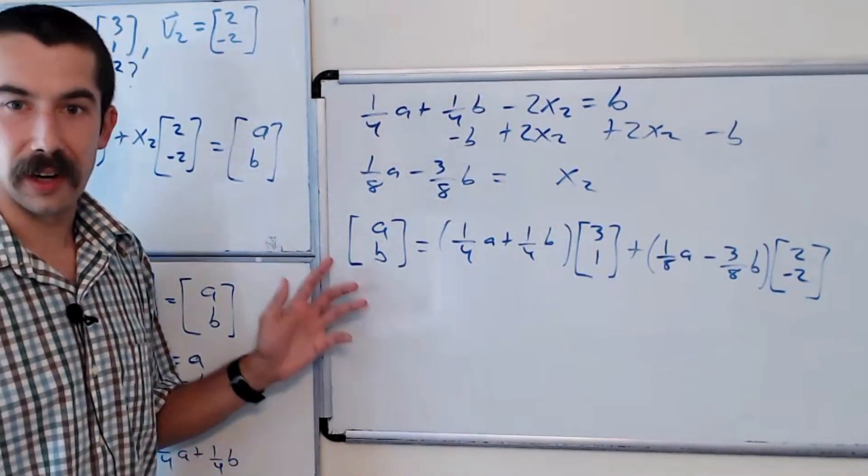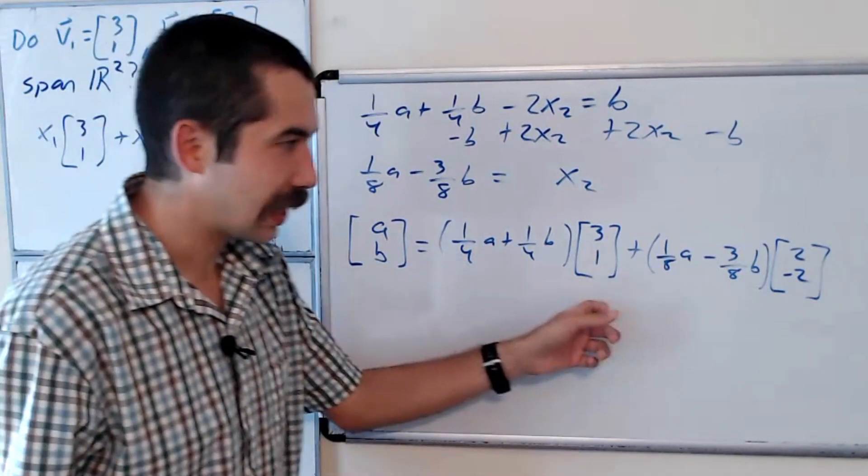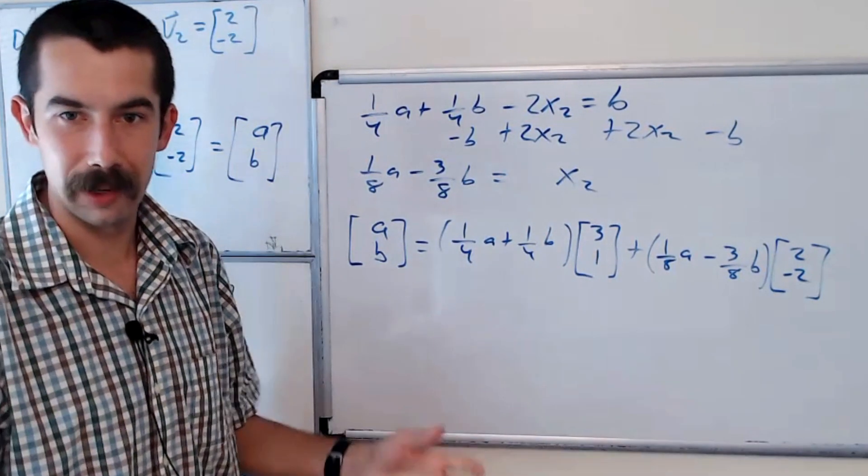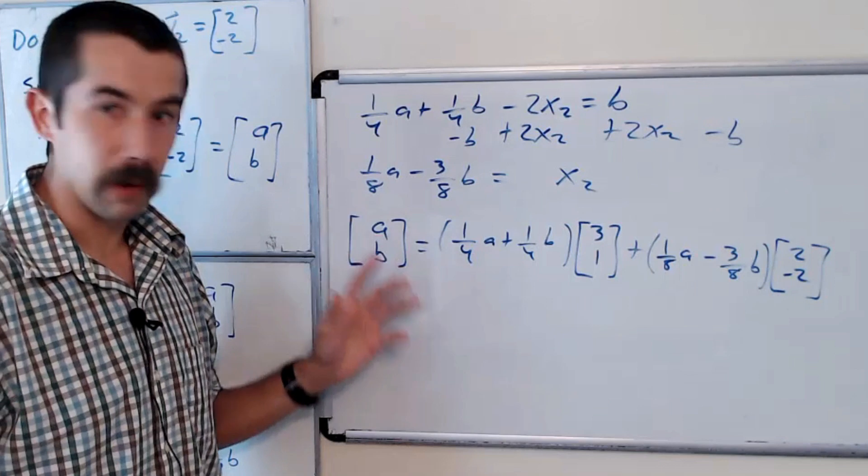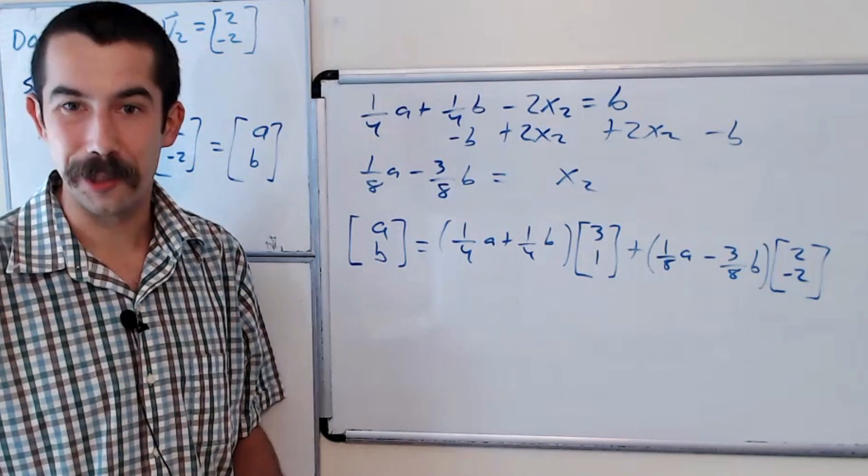Therefore, any vector in R2 can be expressed as a linear combination of the two vectors that we are given. So R2 is spanned by those two vectors.